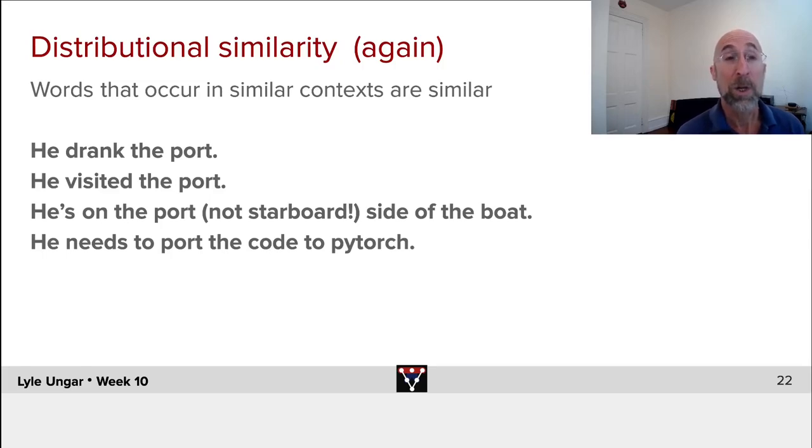So if we do a context-oblivious embedding, we will just average over all of these different meanings of port, putting more weight on the more frequent ones. We will move, of course, to do context-sensitive embeddings that will then capture these many different meanings.